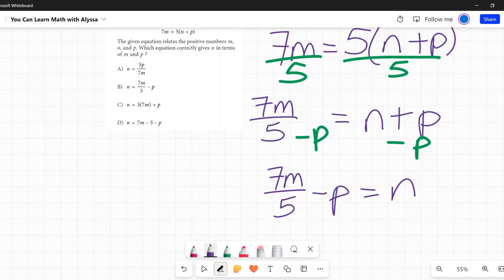So I've done it. I've got n by itself. 7m over 5 minus p. B is my answer.